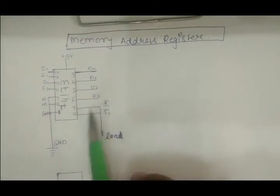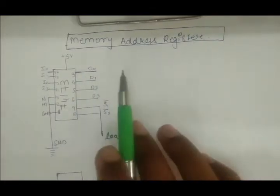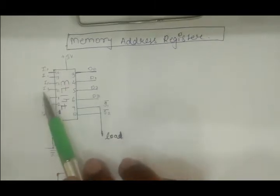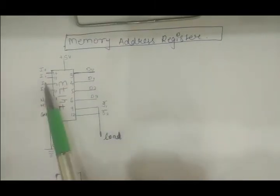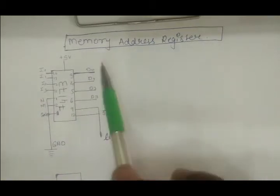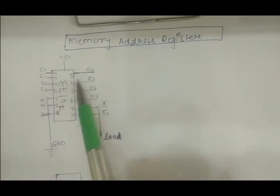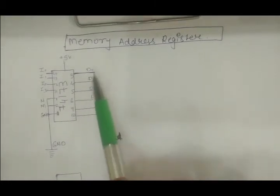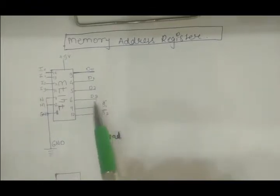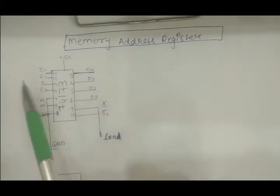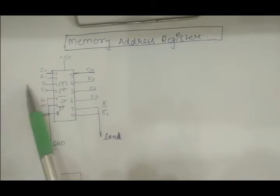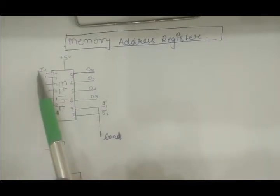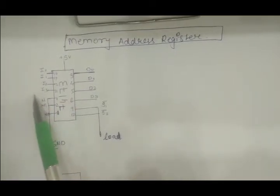This is what we are going to design in this video. We are going to use the 74173, which is a 4-bit D-type register IC. Here are the input pins where we are going to give inputs, and these are the output pins. The value will be stored inside it and output here, and this value will be our 4-bit address which will be going into our RAM.